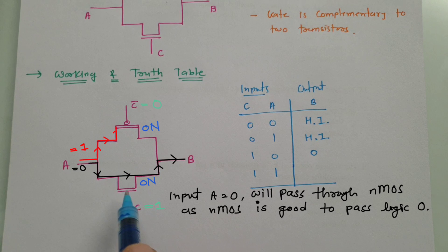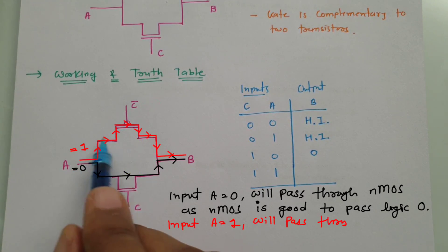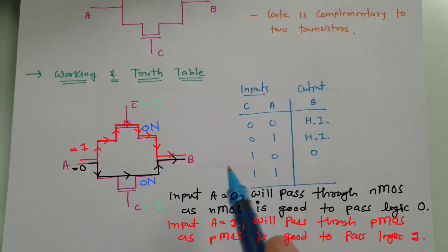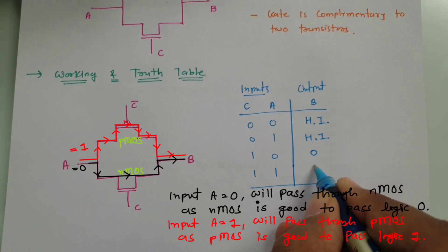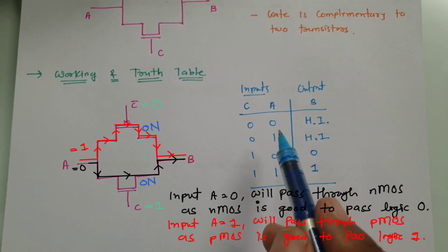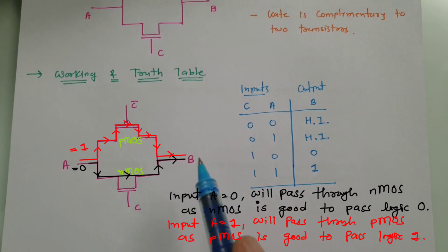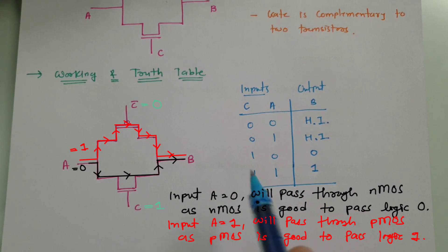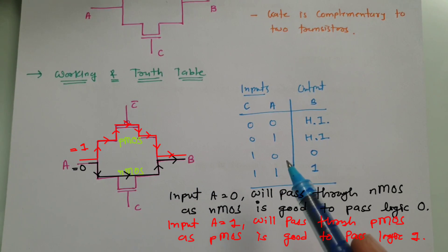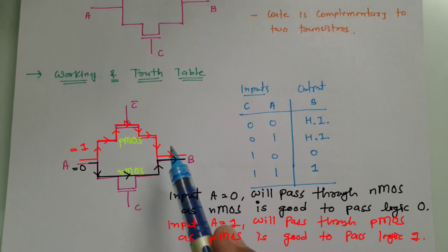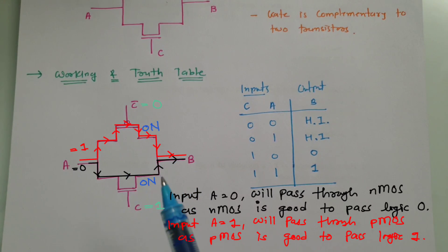When both NMOS and PMOS are on and input is 1, that will pass through PMOS, because PMOS is good to pass logic 1. So the input gets transferred to the output. Observing this truth table, it has 3 states at the output side: if control is 0, output stays in high impedance mode, but if control is 1, input goes to output — output can be logic 0 or logic 1. So this CMOS transmission gate is working as a tri-state buffer.